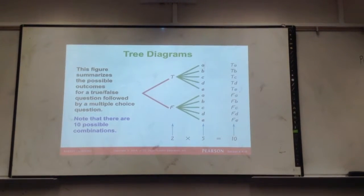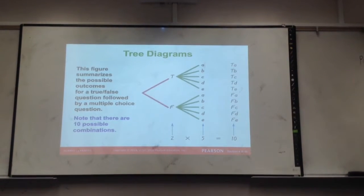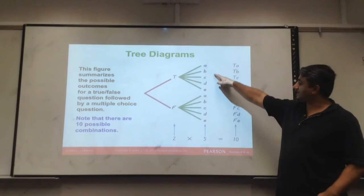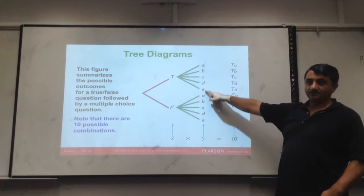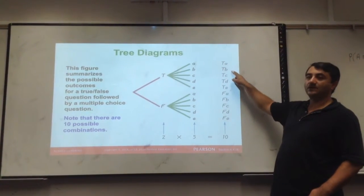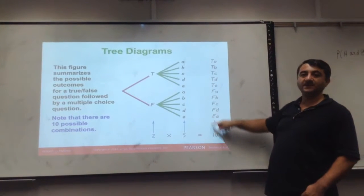So if you want to find out what's the sample space of the true-false, it's only two, and sample space for the multiple-choice is five, so two times five. These are corresponding outcomes in the sample space.